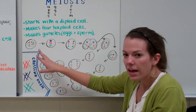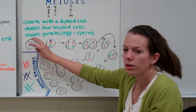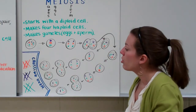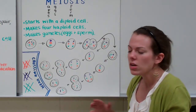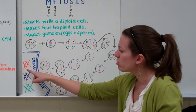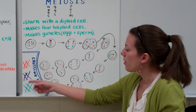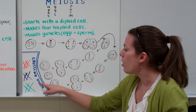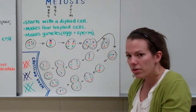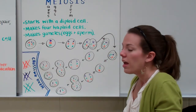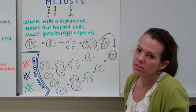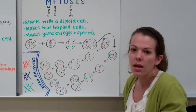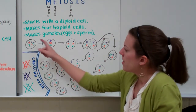Something special happens during meiosis. The chromosomes actually lay on top of one another — you can see the orange chromosomes laying across one another, and the purple and green similarly. What's happening here is called crossing over: they're laying across one another, hence the name, and trading DNA. This makes variation happen during meiosis.